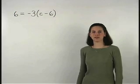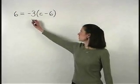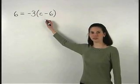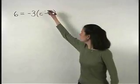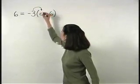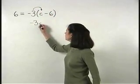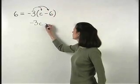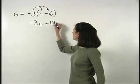To solve this equation, we start by distributing the negative 3 through the parentheses on the right side. Negative 3 times c is negative 3c and negative 3 times negative 6 is positive 18.